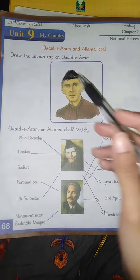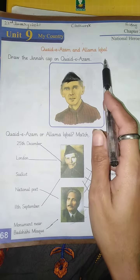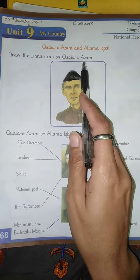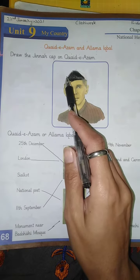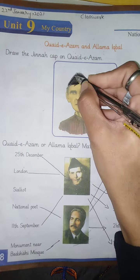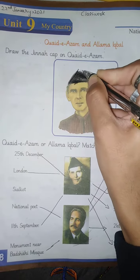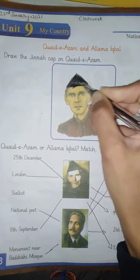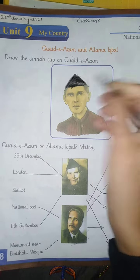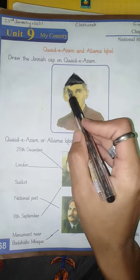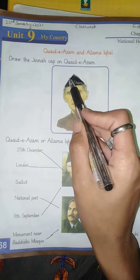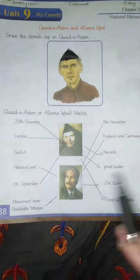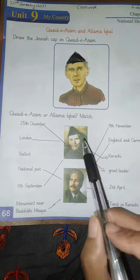Quaid-e-Azam and Jinnah — draw the Jinnah cap on Quaid-e-Azam. So you have to draw the cap of Quaid-e-Azam. He wore the cap like this, so after that you have to draw the Jinnah cap on Quaid-e-Azam like this.